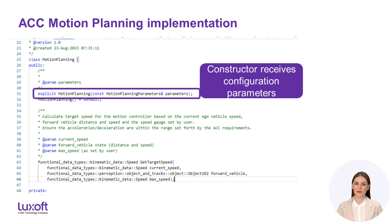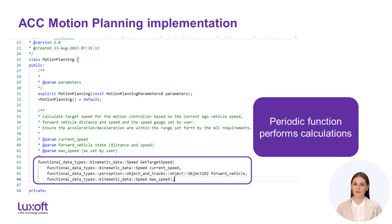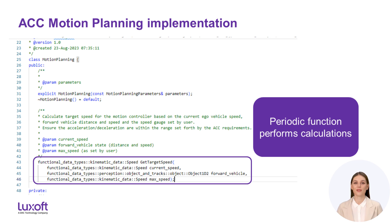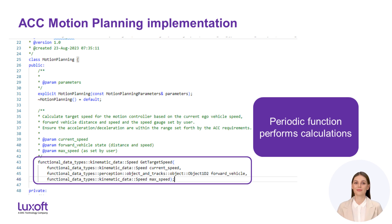Let us look at the ACC motion planning implementation class. As we can see, it has a public constructor which accepts configuration parameters. The function get_target_speed will be called periodically to calculate the target speed for the motion controller based on the current speed of the ego car, information of the forward vehicle, and the maximum allowed speed. Because its C++ interface only accepts numeric data and will not compile otherwise, we won't be able to feed it with ASCII art or emojis — but fear not, we will still be able to break it.